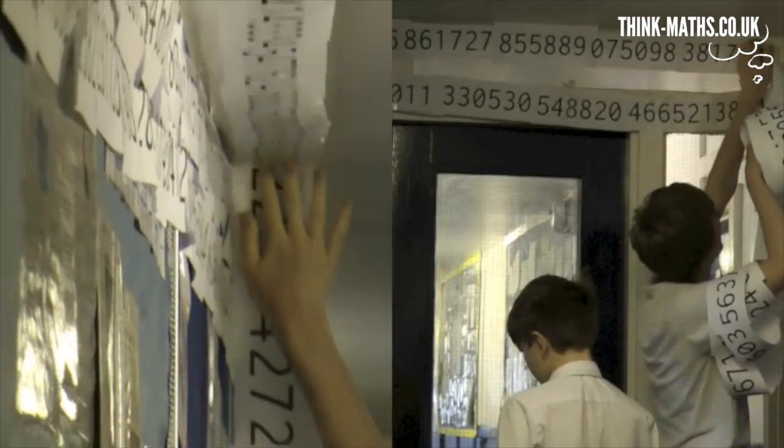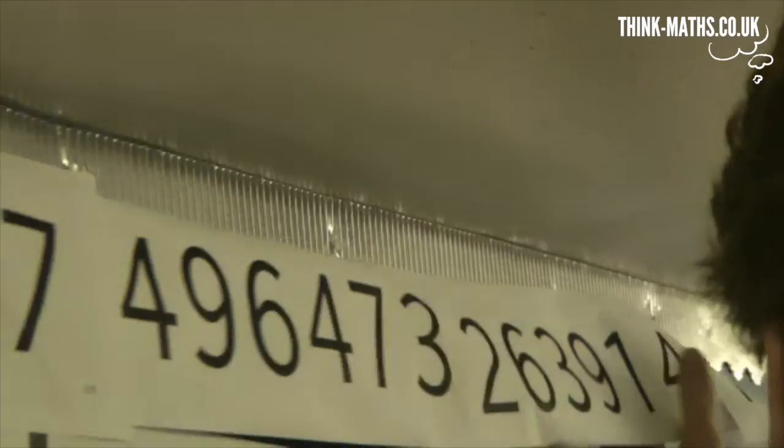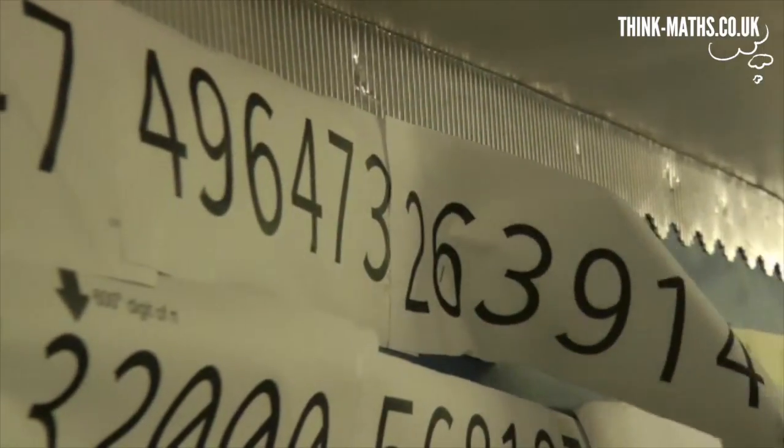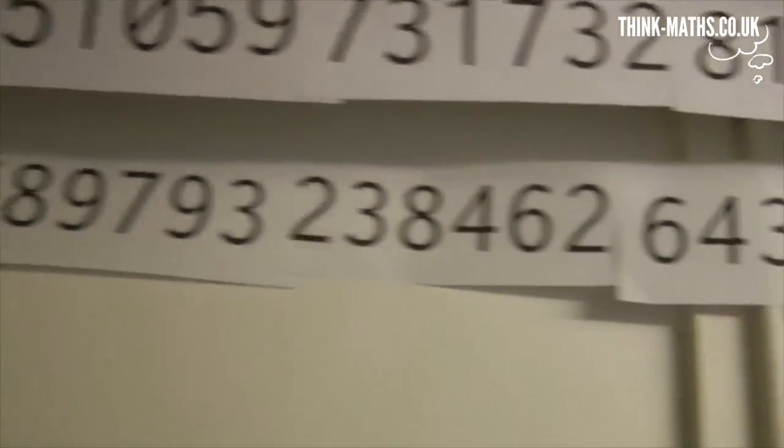So that's the Mile of Pi, available as a free download from thinkmaths.co.uk. There are enough digits in this file to print a whole mile, or if you prefer, 1.6 kilometres of Pi, and even longer if you print on A3. That's surely more than anyone will ever need.